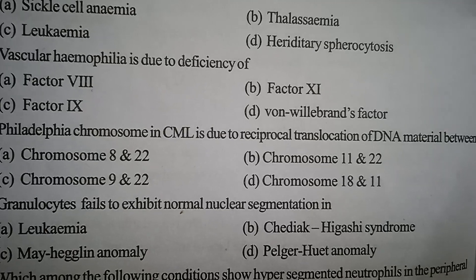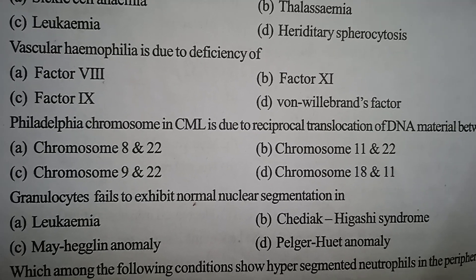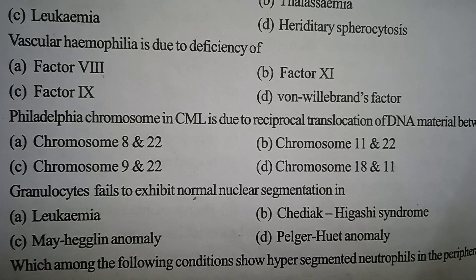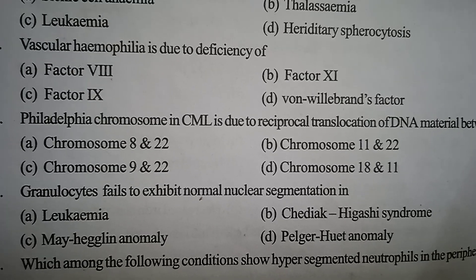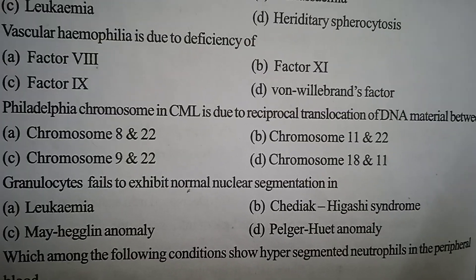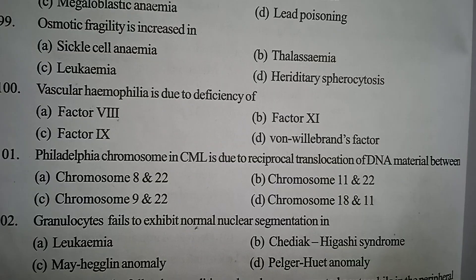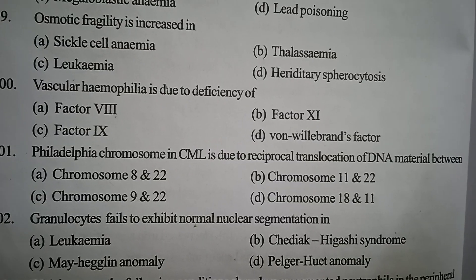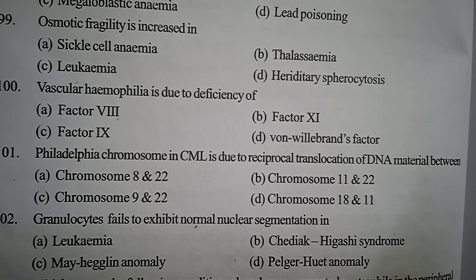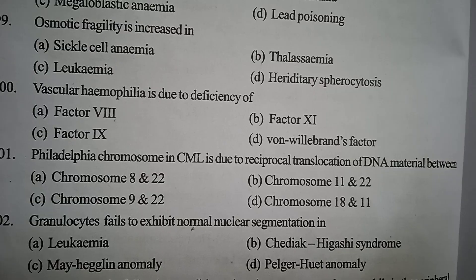Next one: granulocytes fail to exhibit normal nuclear segmentation in — Option A: leukemia. Option B: Chédiak-Higashi syndrome. Option C: May-Hegglin anomaly. Option D: Pelger-Huet anomaly. Correct answer: Option D, Pelger-Huet anomaly.